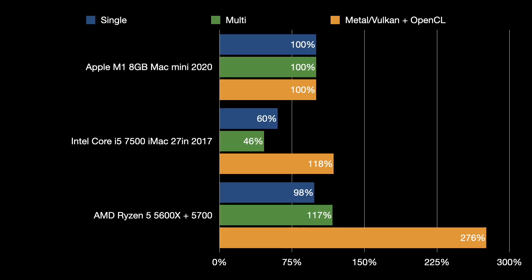We know the M1 is a great mobile chip, but how does it compare to desktop chips? I want to look a little closer at desktop systems, and then go on an even deeper dive — just the M1 versus the Ryzen Zen 3 — looking at power consumption and what this all means for the industry.